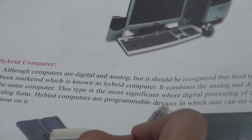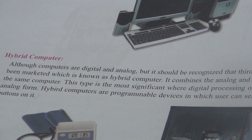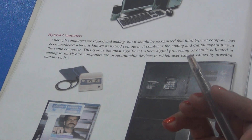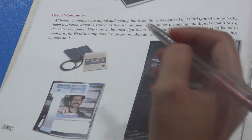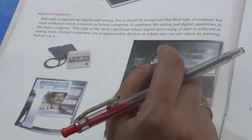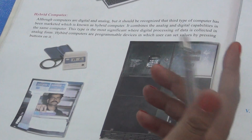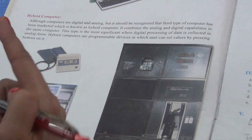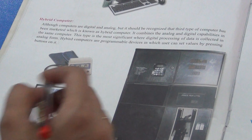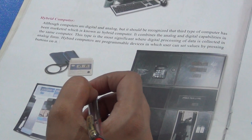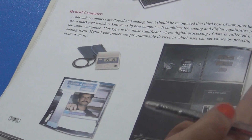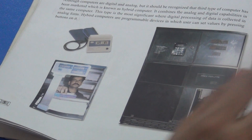Hybrid computers are programmable devices in which the user can set values by pressing buttons on it. Iske bahar buttons hote hain jinko press karke input diya jata hai, aur output digital form mein diya jata hai. For example, a petrol filling machine — aapne petrol bharwaya hoga: jab button press karte hain aur petrol ka pressure hota hai, that is a physical quantity — that is Analog form. Lekin jab answer aata hai — kitne rupees aaye, kitne litre petrol — that is Digital form. Yaani jab data diya Analog form mein aaya, aur jab result diya to Digital form mein aaya. Thank you.